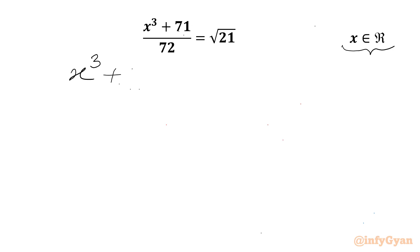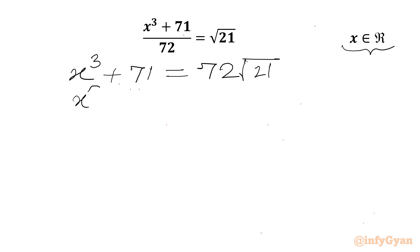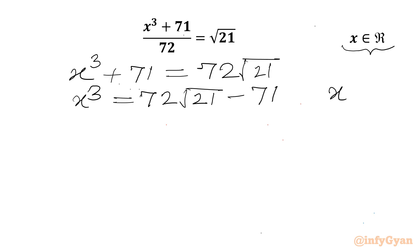We can cross multiply and write x³ + 71 equal to 72 times square root of 21. Subtract 71 from both sides, so x³ will become 72√21 minus 71. Now x³ is positive, and for real x, x must be positive.